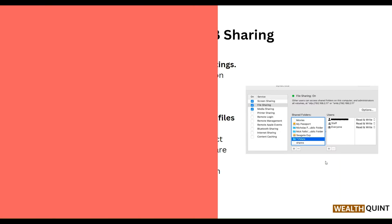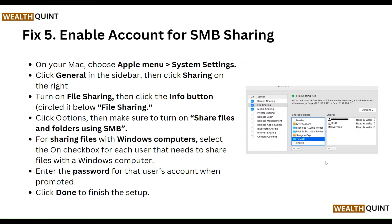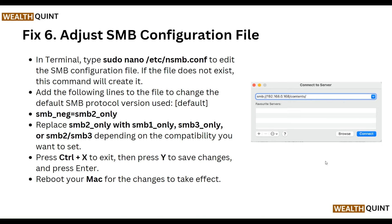Our fifth step is to enable your account for SMB sharing. On your Mac, choose the Apple menu, go to System Preferences > General, then click Sharing on the right and turn on File Sharing. Click the information button next to File Sharing, click Options, and make sure 'Share files and folders using SMB' is turned on for sharing files with Windows computers. Select the checkbox for each user that needs to share files with Windows computers, enter the password for that user account when prompted, and click Done to finish the setup.